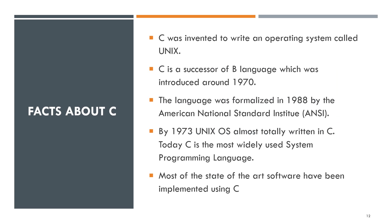Facts about C. C was invented to write an operating system called UNIX. C is a successor of the B language, which was introduced around 1970, and the language was formalized in 1988 by the American National Standard Institute (ANSI). By 1973, the UNIX OS was almost totally written in C, and today C is the most widely used system programming language. Most state-of-the-art software has been implemented using C.